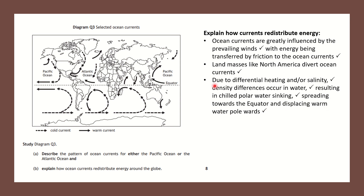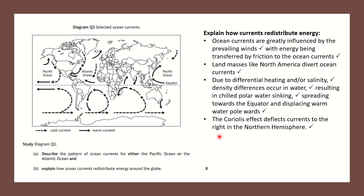The gyre-like movement of the ocean is due to the Coriolis force. The spin of the Earth causes geographical features such as hurricanes to spin, and the oceans are no different — they also have these gyre-like spins. You'll notice they are anti-clockwise in the southern hemisphere and clockwise in the northern hemisphere. The Coriolis force deflects currents to the right in the northern hemisphere due to the Earth's spin.